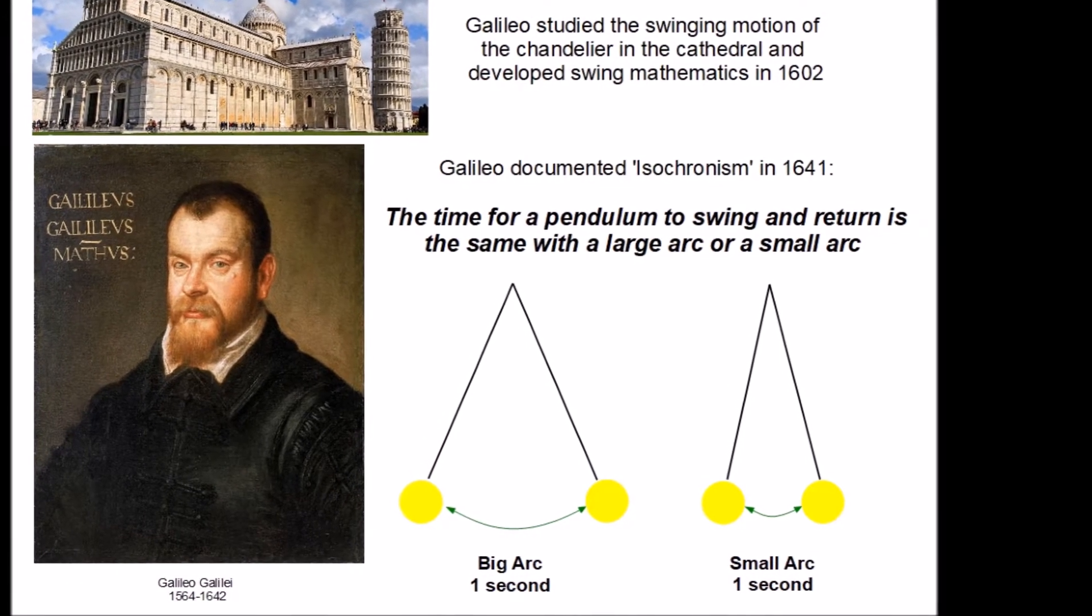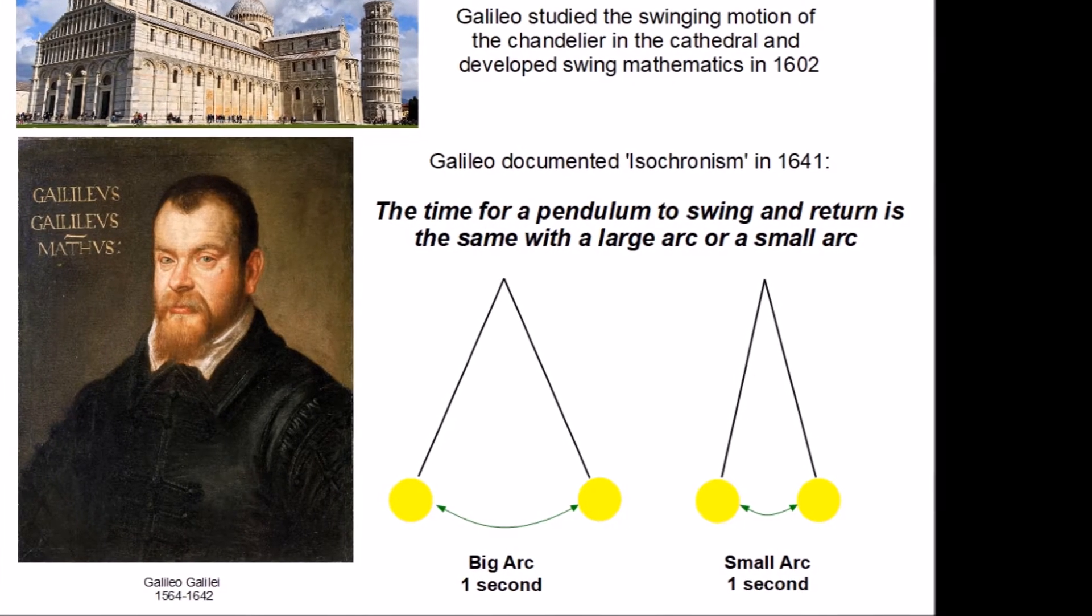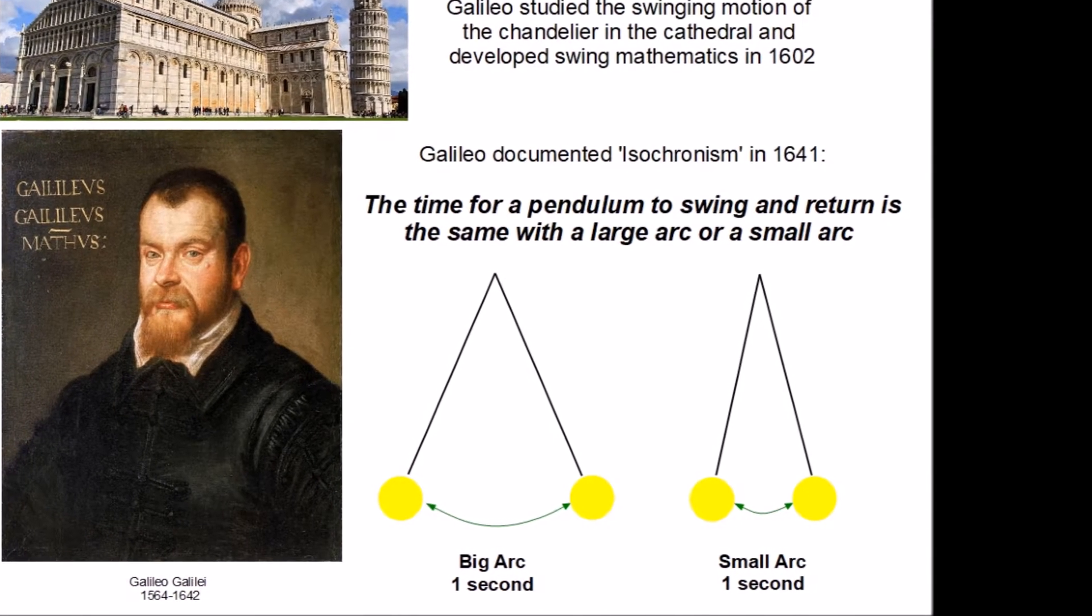Galileo discovered that a pendulum took the same amount of time to swing back and forth if it had a small arc or a large arc.